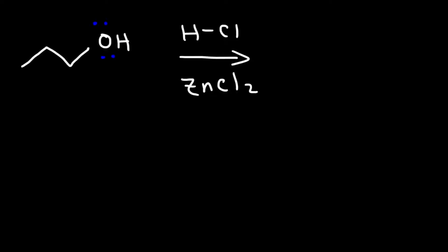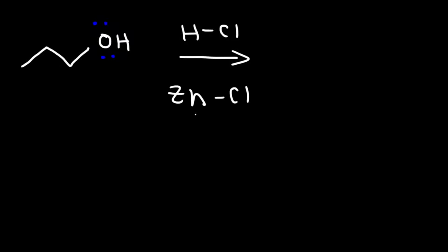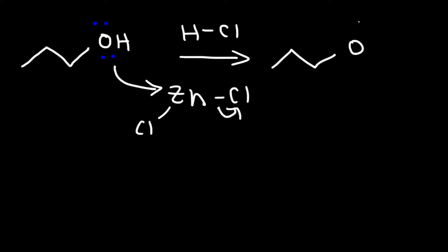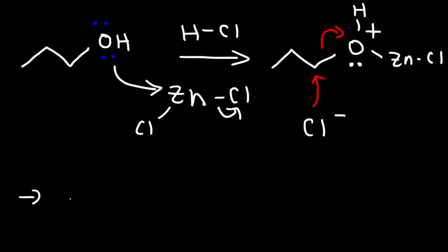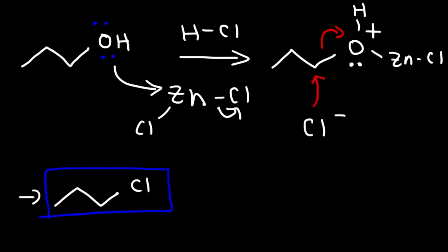The oxygen attacks zinc chloride, expelling a chloride ion. We get an intermediate where the oxygen is attached to a hydrogen and the zinc species, giving the oxygen a positive charge — making it a good leaving group. In the second step, the chloride ion attacks the carbon and kicks out the oxygen, giving us our alkyl halide.